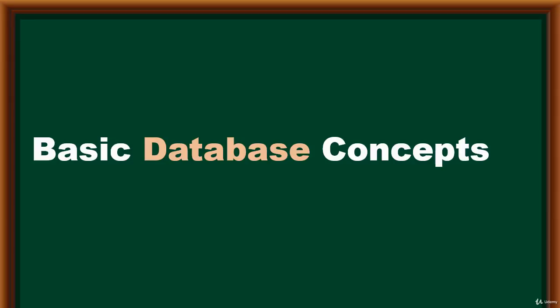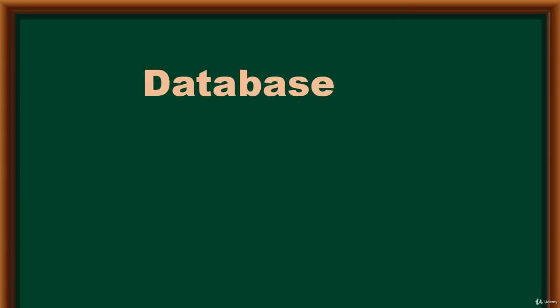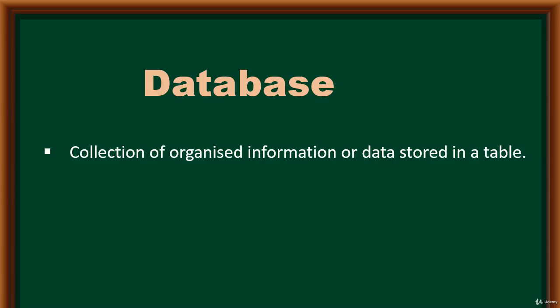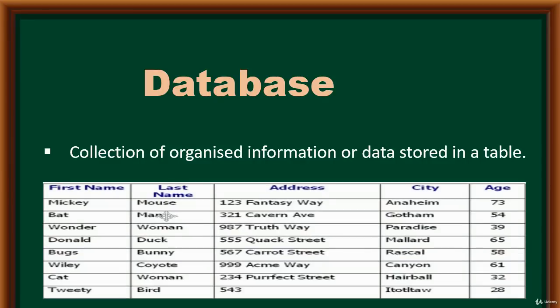Hello and welcome. I'm going to introduce you to some basic database concepts, starting with a database. What is a database? A database is basically a collection of organized information or data stored in a table. A table consists of columns — shown in blue — and rows. These rows are known as records, and each record is unique in a table.